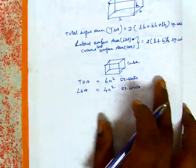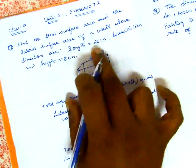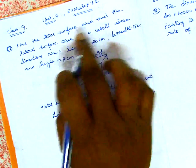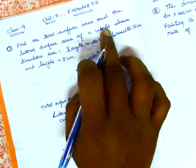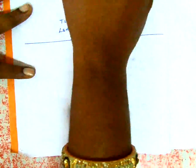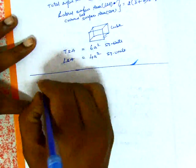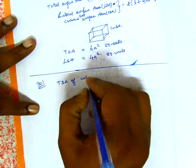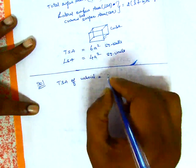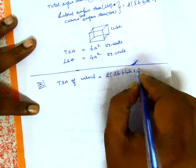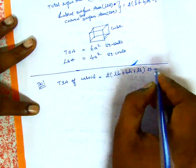Now for the question — cuboid TSA and lateral surface area. The TSA of a cuboid formula is: 2 into (LB + BH + LH) square units.